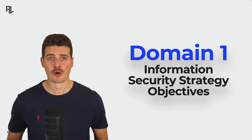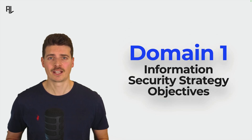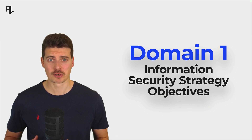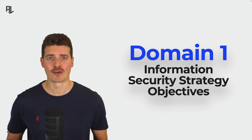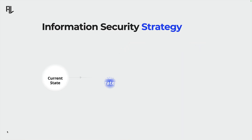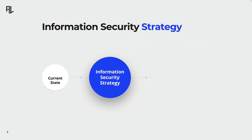In the previous lecture, we learned that a strategy is the plan to achieve objectives. Now let's have a closer look at the actual objectives of an information security strategy. In order to define objectives, we have to start where we are currently at — the so-called current state.